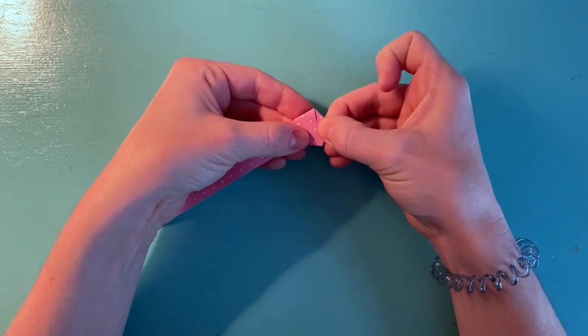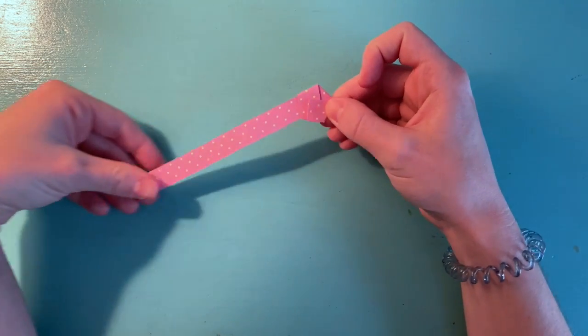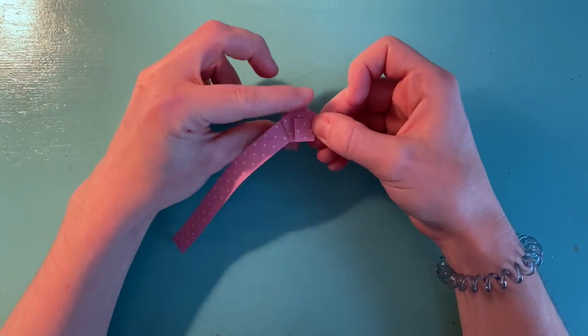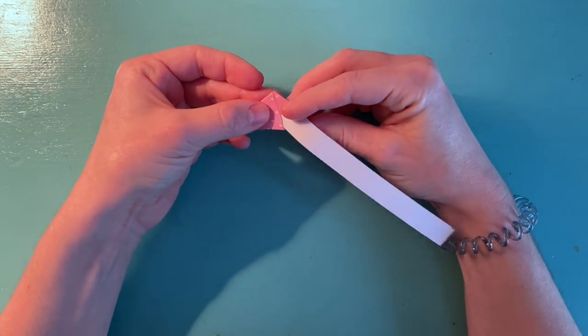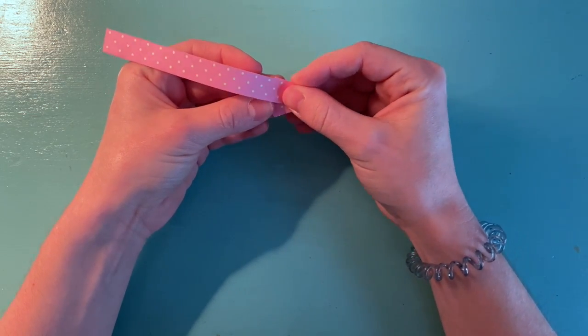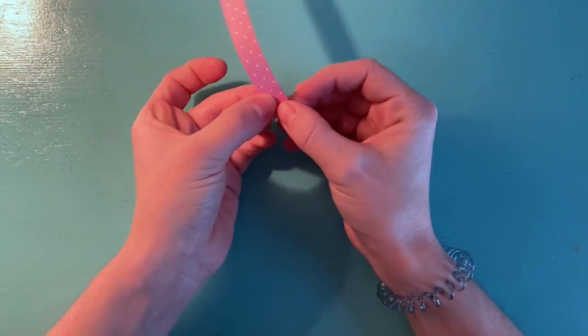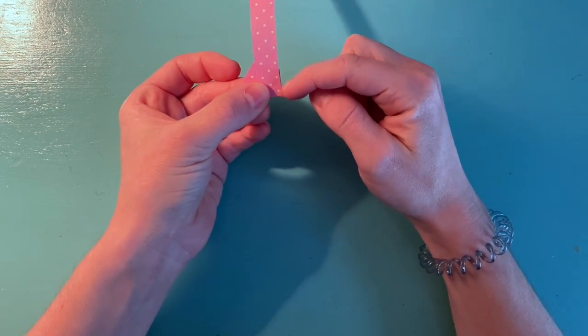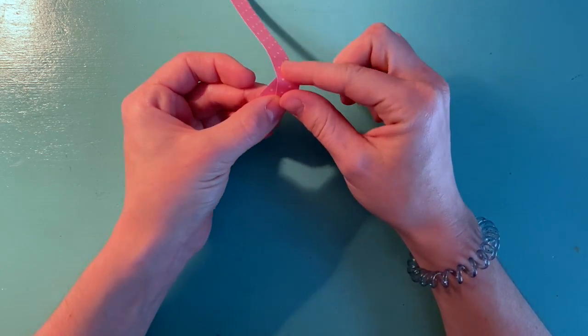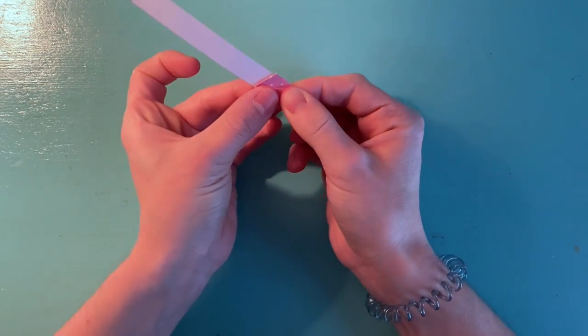Now, you're going to take that long tail and start repeatedly folding it over. But when you fold it over, you want the edges of the strip to line up with the edge of your pentagon you just made. So as you fold, make sure it lines up with the closest edge. And repeat this step until you get to the end.